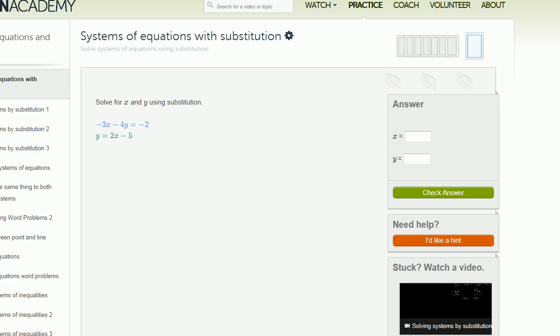And so this is the first exercise, or the first problem they give us. Negative 3x minus 4y is equal to negative 2, y is equal to 2x minus 5.